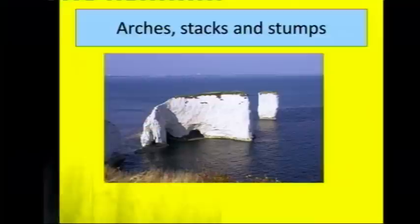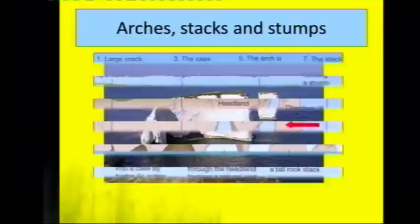Arches, stacks and stumps. This is when you have a headland sticking out into the sea, so it's really hard resistant rock, in this case we've got limestone. It's when the waves are making a fault line in the hard rock through hydraulic action and abrasion. Over time this fault line or unstable rock is going to start to become bigger and we're going to get a cave.